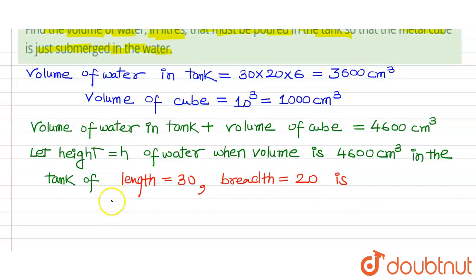Now we can say that h multiplied by 30 multiplied by 20 is equals to 4600.